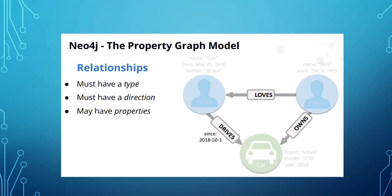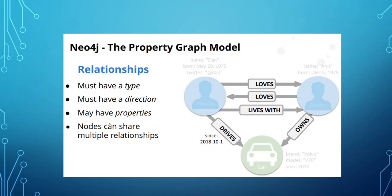Even relationships have properties. For the 'drives' relationship, you can store information like from which date the person has been driving the car. If you want to add that information, you can add properties to the relationship. Also, nodes can share multiple relationships — a node can have any number of relations. In this image, person one is sharing three relationships with these two nodes.